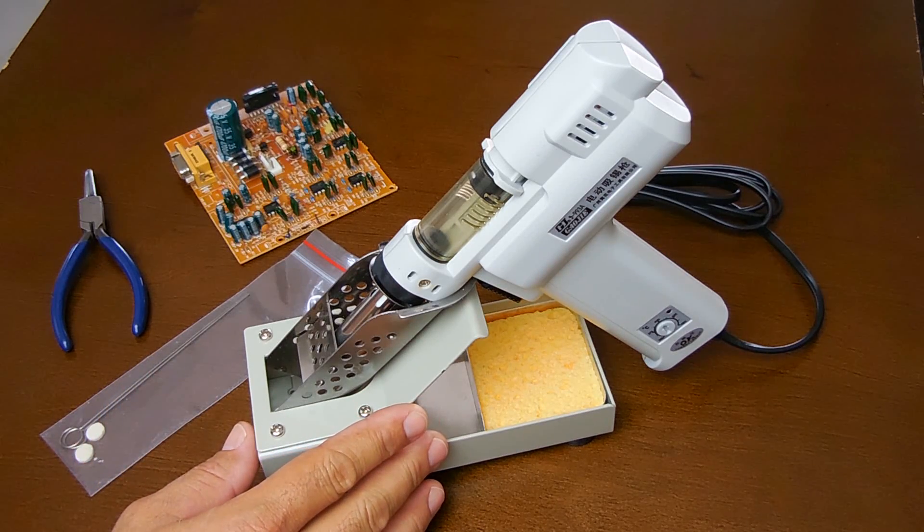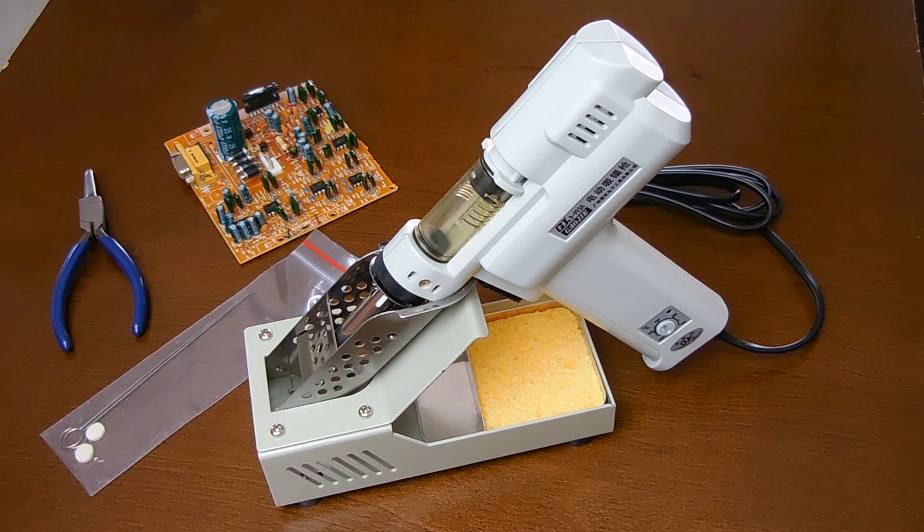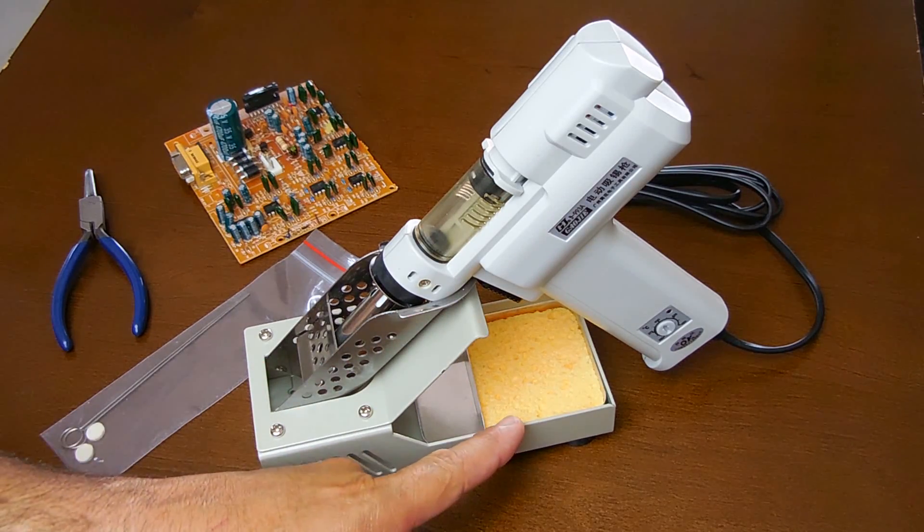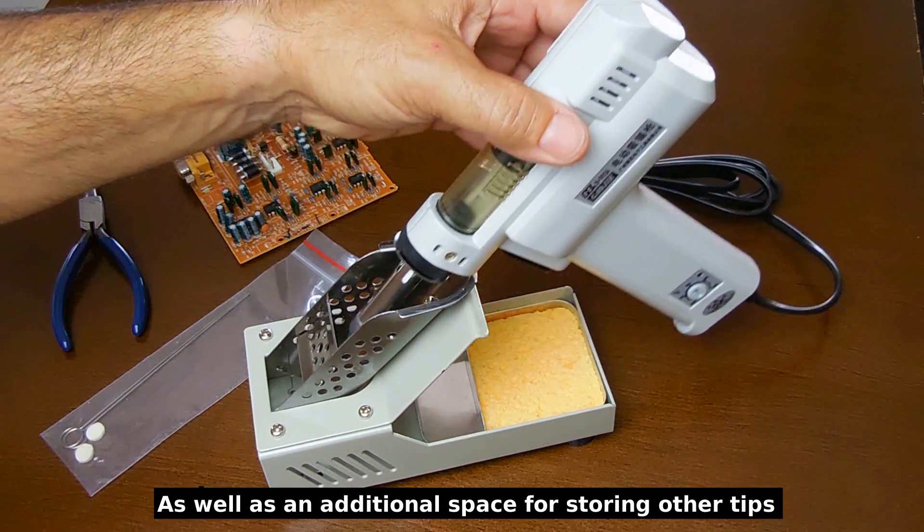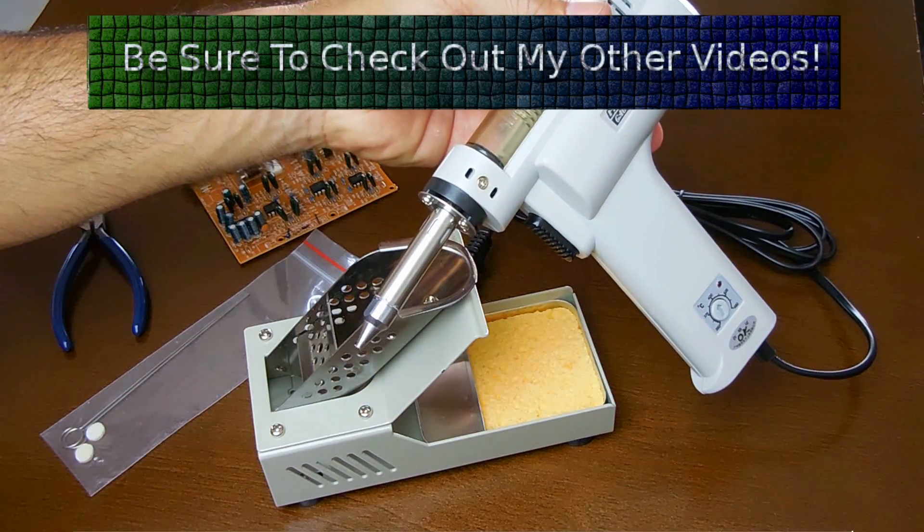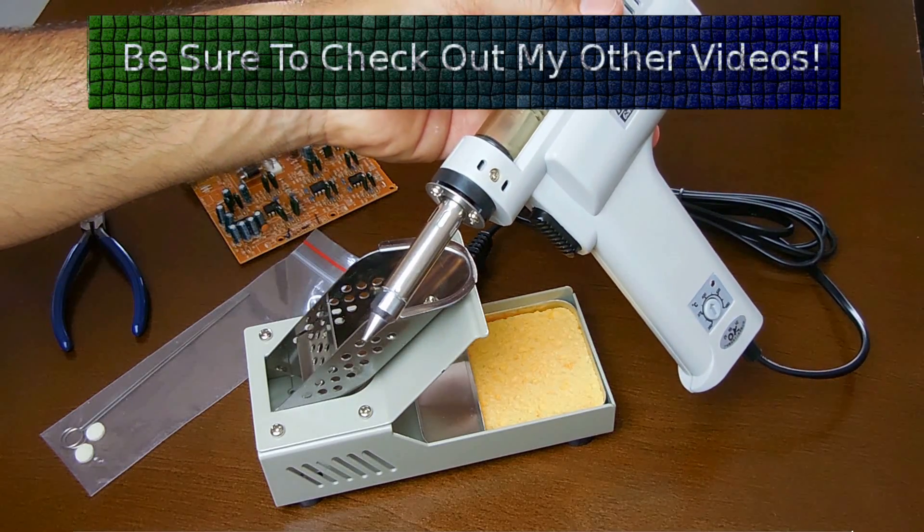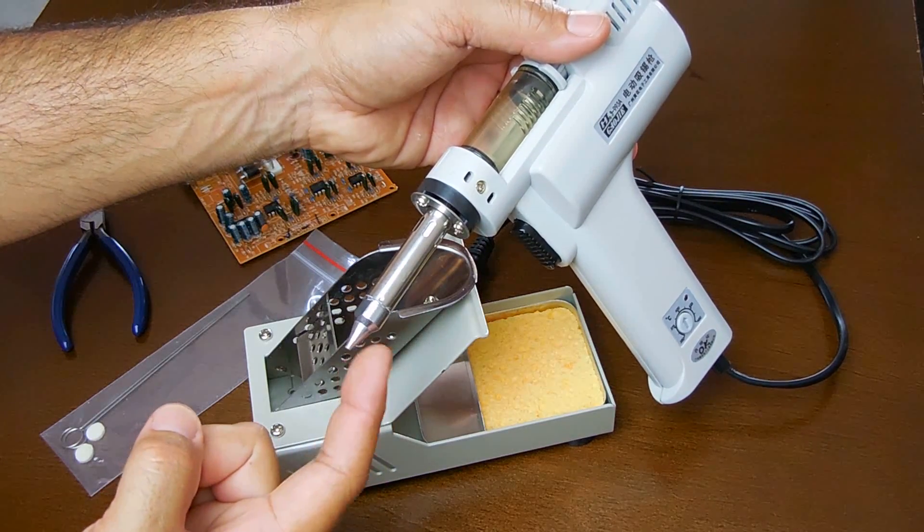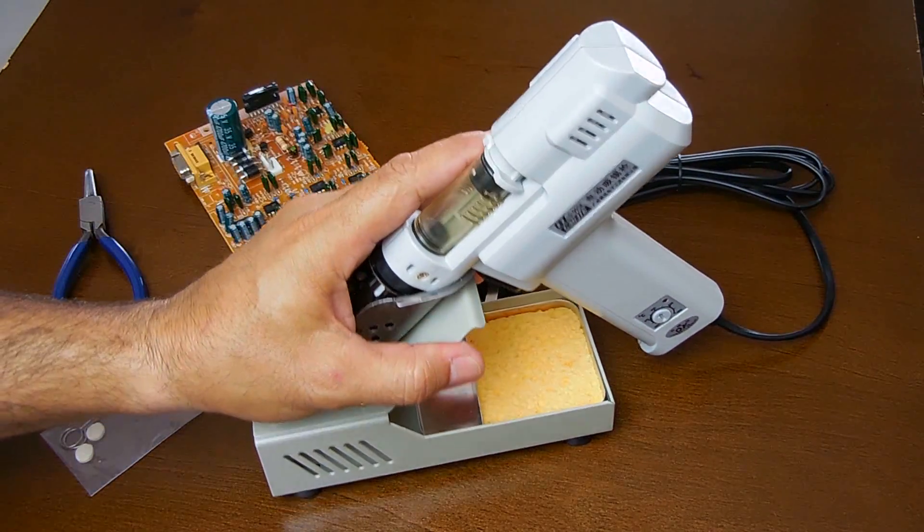With this desoldering gun you get this very nice heavy gauge steel base, part of it is stainless where the gun slides in. You have this little tray over here for your sponge. The unit comes with this one tip right here, it's more or less a universal size which works pretty well, but if you're going to be desoldering larger components that have larger diameter leads, you're going to want to purchase the next size up tip as well.